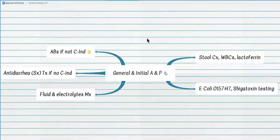For a patient with acute diarrhea, initial labs in resource-rich settings include stool culture, white blood cells, stool lactoferrin, and Shiga toxin and Shiga-like toxin testing. Treatment follows a three-tier approach: fluid rehydration for all patients, antidiarrheals when no contraindication is present, and antibiotics also when no contraindication is present. For more detail, review the traveler's diarrhea episode.